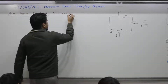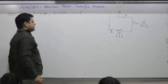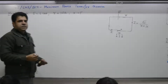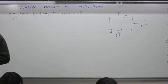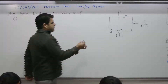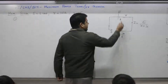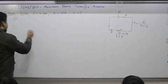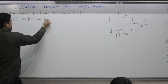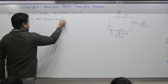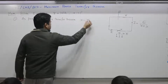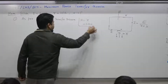Find the value of X. As per the maximum power transfer theorem, maximum power will be transferred across X when X is equal to R. So X is equal to R, which is 1.5 ohm.